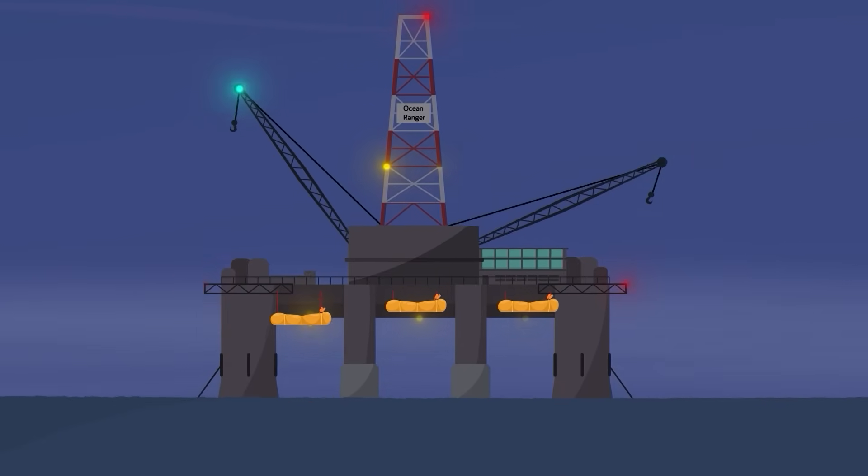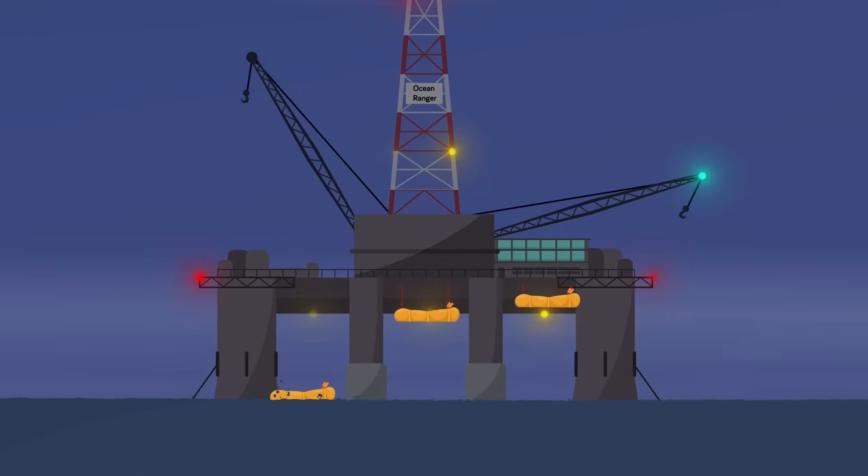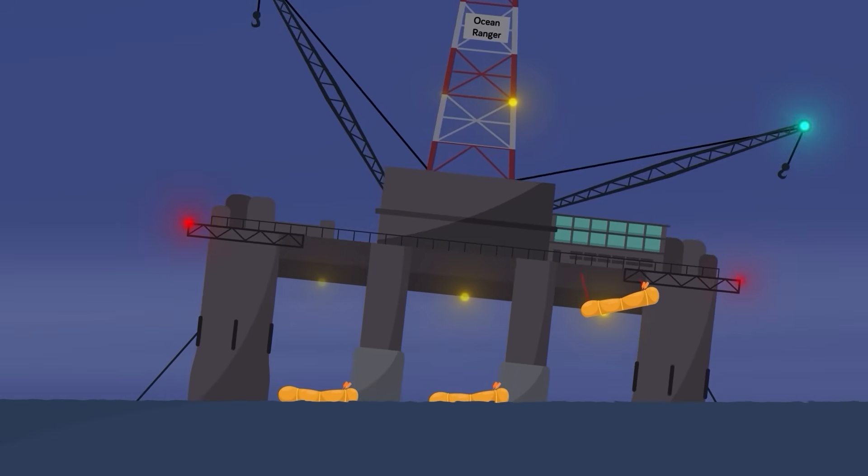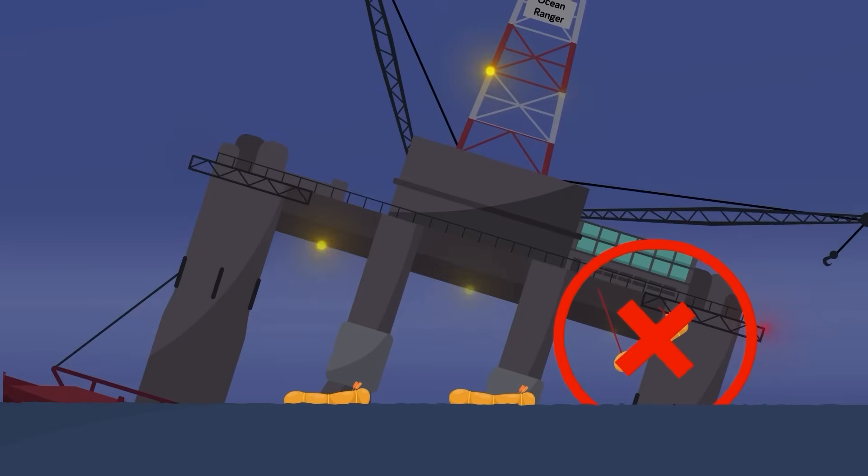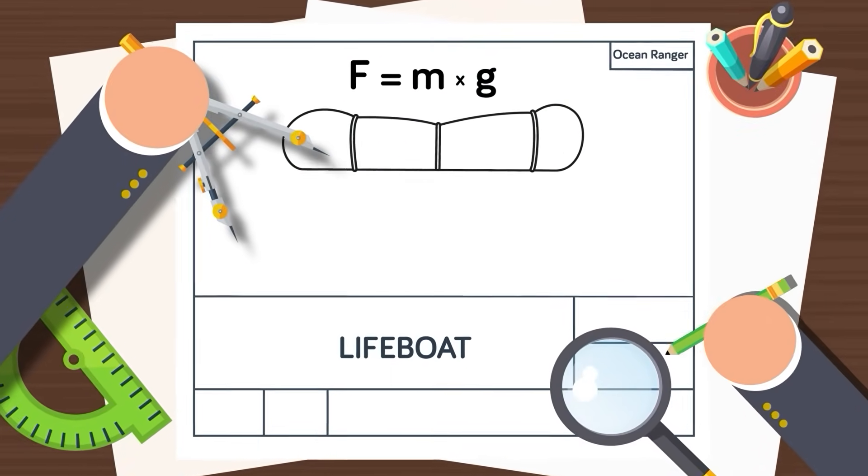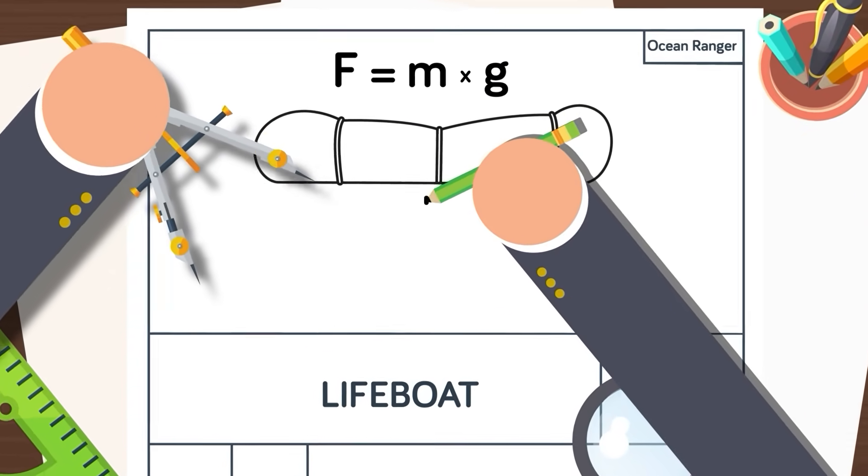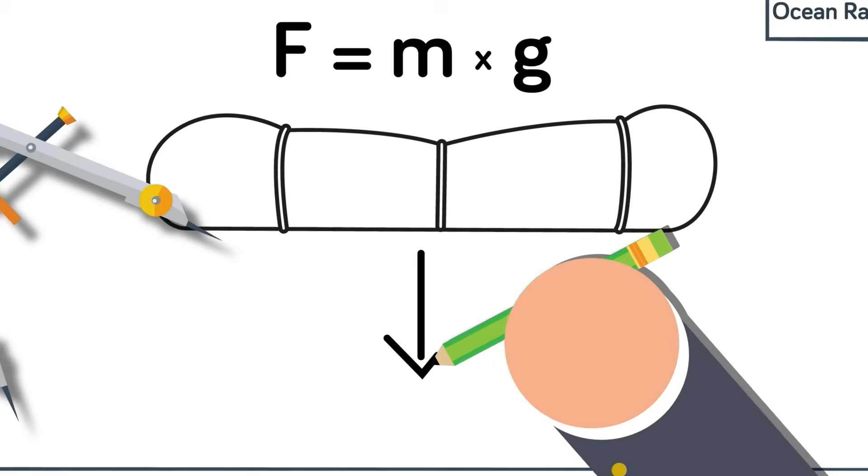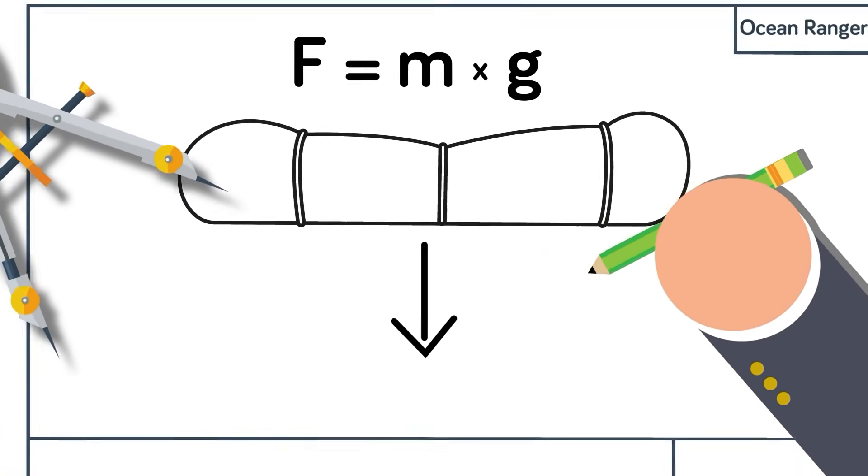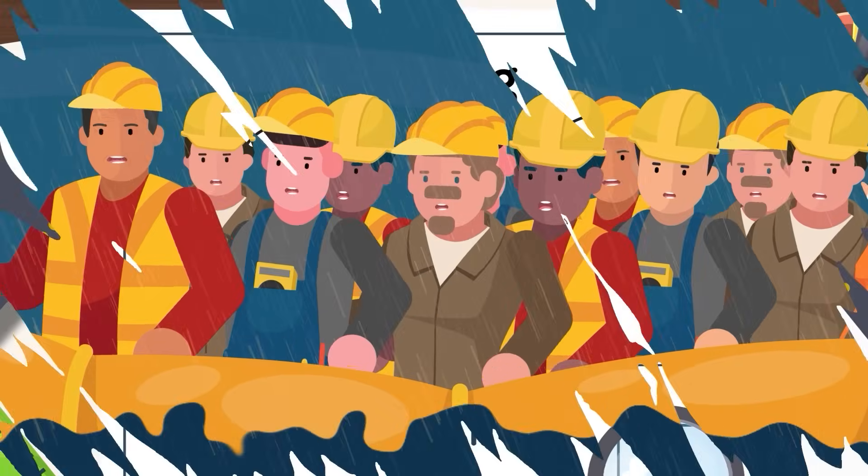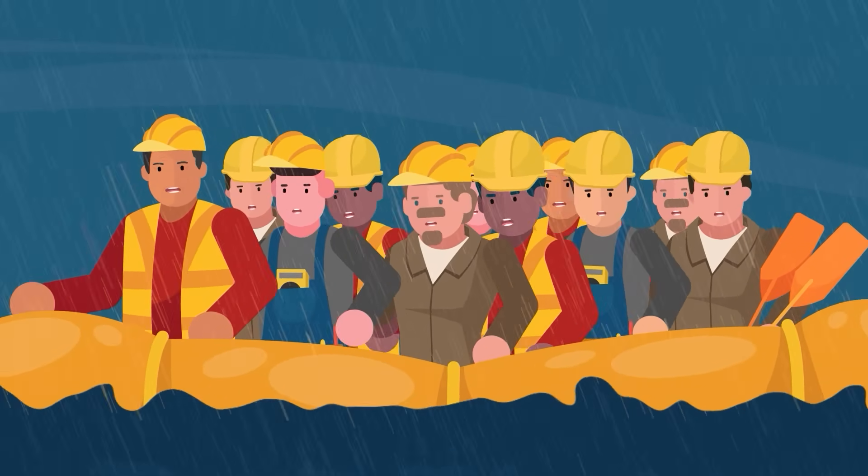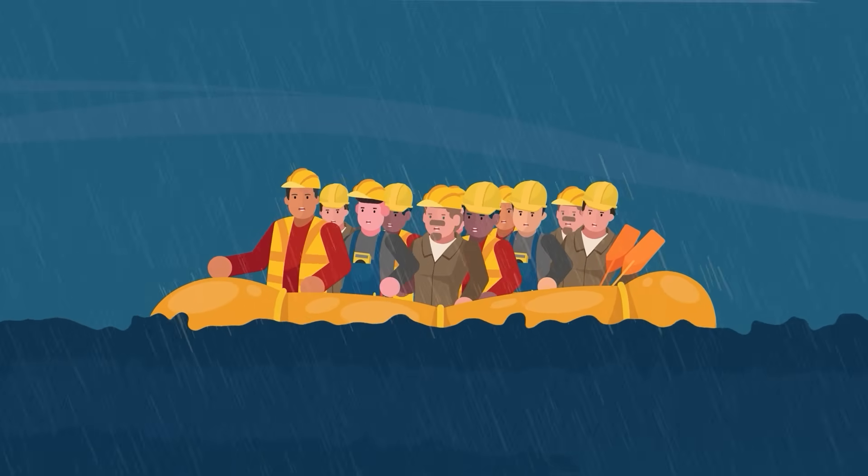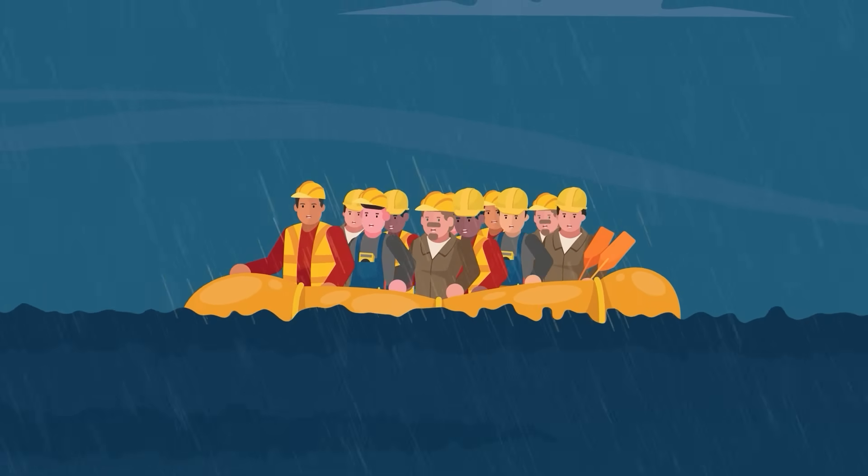The lifeboats aboard the Ocean Ranger, like many, were designed to launch in adverse and extreme conditions. But not many are intended to launch at the angle the oil platform was now listing. In particular, the lifeboats aboard the Ocean Ranger relied on gravity to drop directly down into the water, meaning the rig needed to be relatively level, which it certainly was not anymore. But in a minor miracle, one of the lifeboats was able to successfully launch, containing up to 36 members of the crew all jammed inside the tiny vessel.